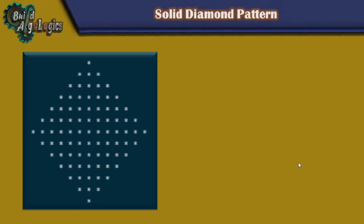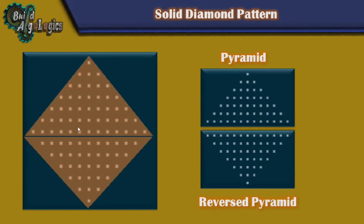Here first we'll write our code to print the diamond pattern. These two parts are nothing but spaces, and these two patterns are nothing but our solid pyramid and the reverse pyramid patterns — we already had written code for these patterns. Today I will provide two possible solutions, and in the next video you will find some more solutions of this diamond pattern.